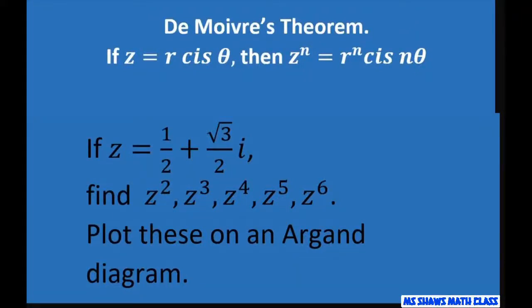Hi everyone. We're going to use De Moivre's Theorem. If z equals r cis θ, then z^n equals r^n cis nθ. This is an example of De Moivre's Theorem, and we're given z. We're going to write this in polar form, then find all of these using this formula. Then we're going to plot them on an Argand diagram.